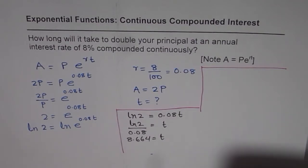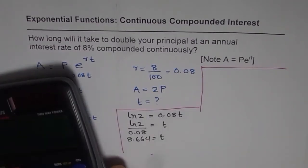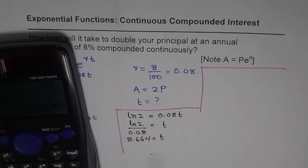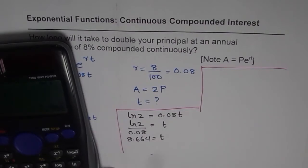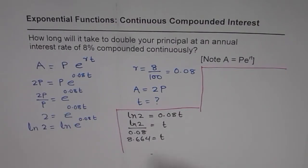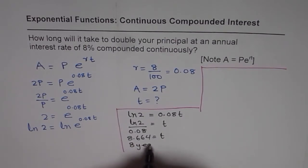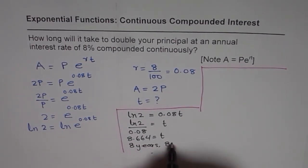So that is the time which will be taken to double the amount. That means 8 years, 8.664 years. Now, 0.664 is how many months? 0.664 times 12 will give us months, which is approximately 8 months. So we can write our answer as 8 years and 8 months.